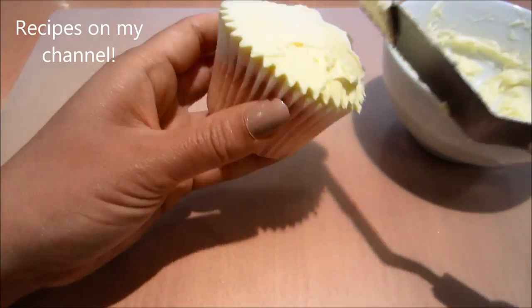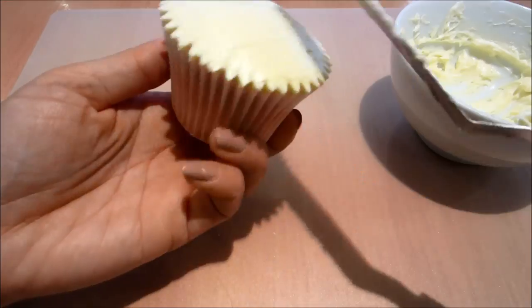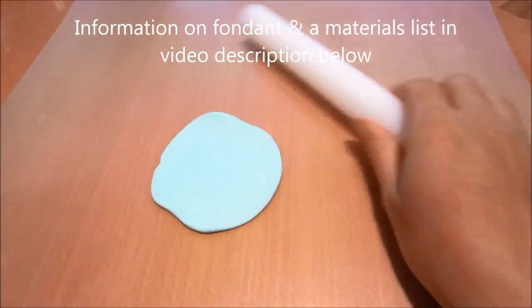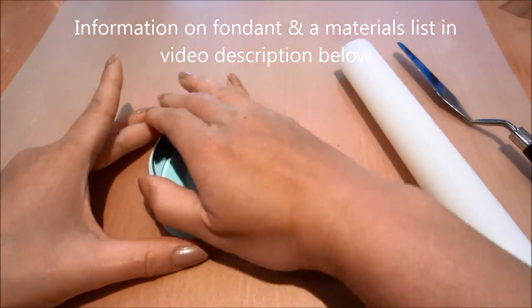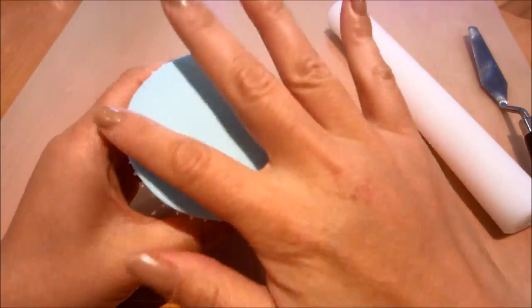I'm going to start by icing my cupcake with buttercream. Next I'll be rolling out some blue colored fondant. I'm going to use my circle cutter to cut out a disc of fondant and smooth it over on top of my cupcake.